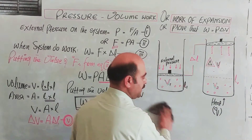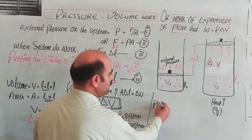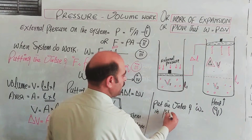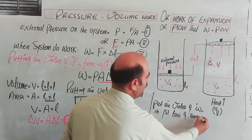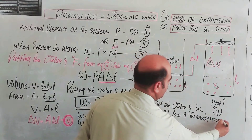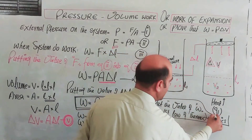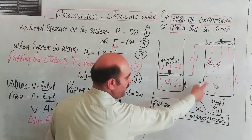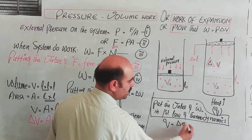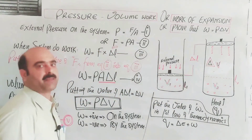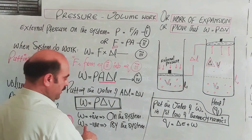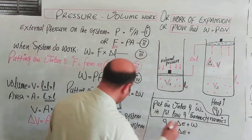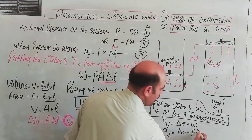Putting the value of W into the mathematical form of the first law of thermodynamics: Q equals delta E plus work done. This is the original mathematical form. Now W equals P delta V, so Q equals delta E plus P delta V.